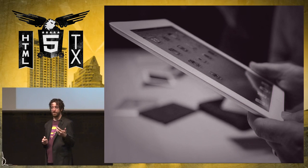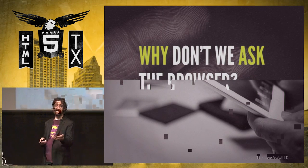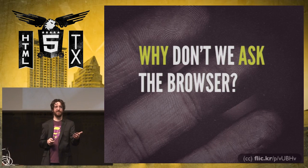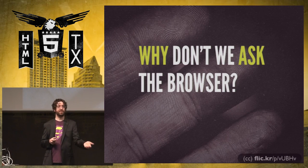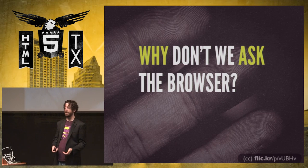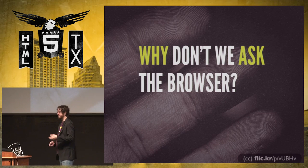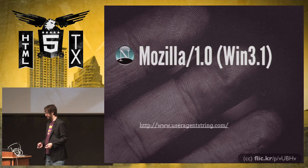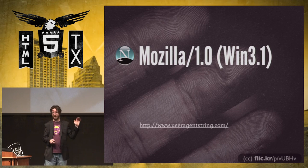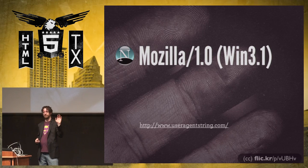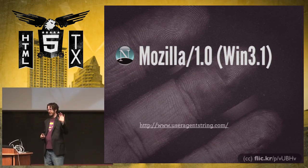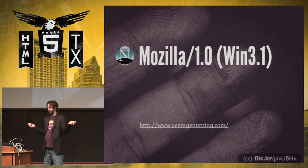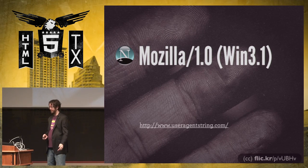One thing we could do is ask the browser who it is, and then give it the images it needs. That was actually built into the first browser, Mozilla. You can use the user agent string and say, 'Who are you? What type of browser are you?' And it's like, 'Oh, I'm Mozilla 1.0, Windows 3.1.'